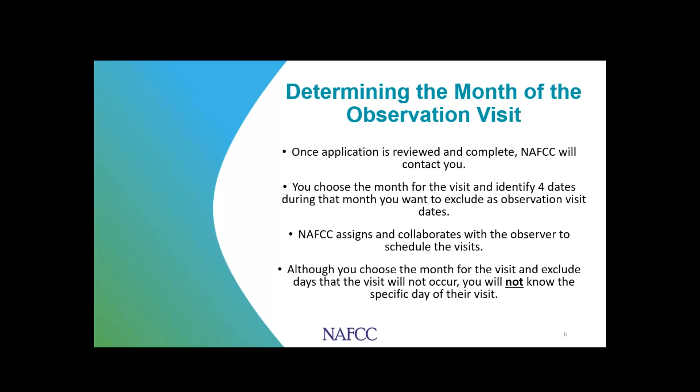As long as you submit a complete application, your observation month will be one of those listed on the chart on our website. Once your application is reviewed and complete, a team member will call or email you to ask which of two months you prefer, and they'll also ask you to pick four exclusion dates. After we hear back from you, we'll reach out to an observer to coordinate and schedule your visit. All days other than your exclusion dates and federal holidays will be considered eligible days, and you will not know the specific date of your visit.